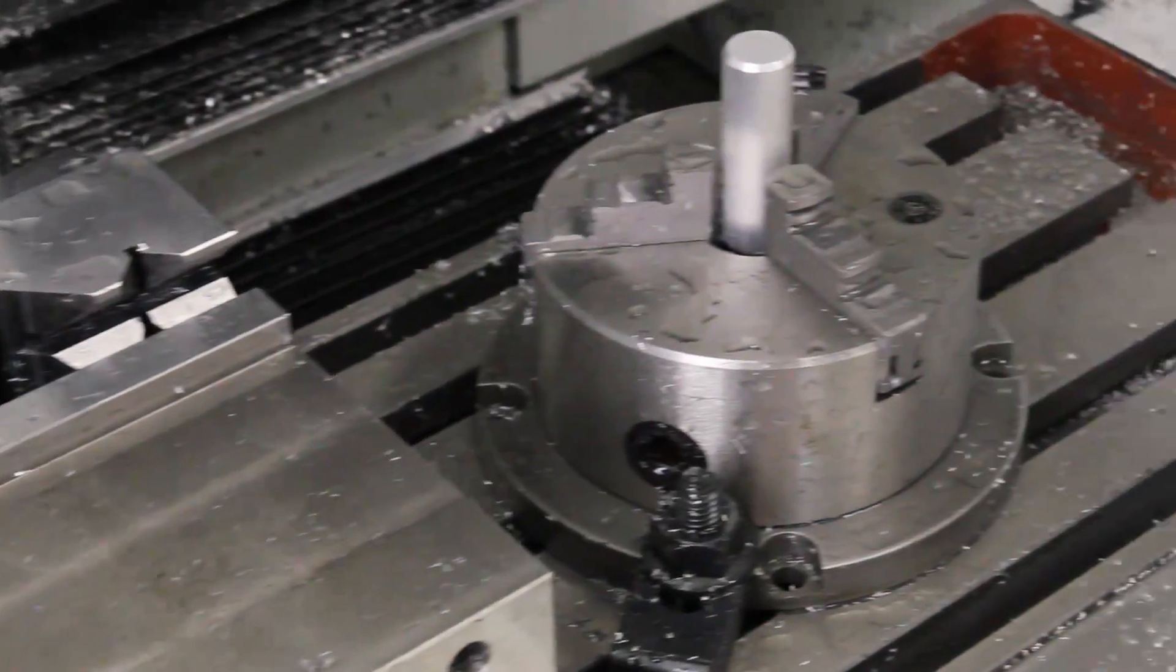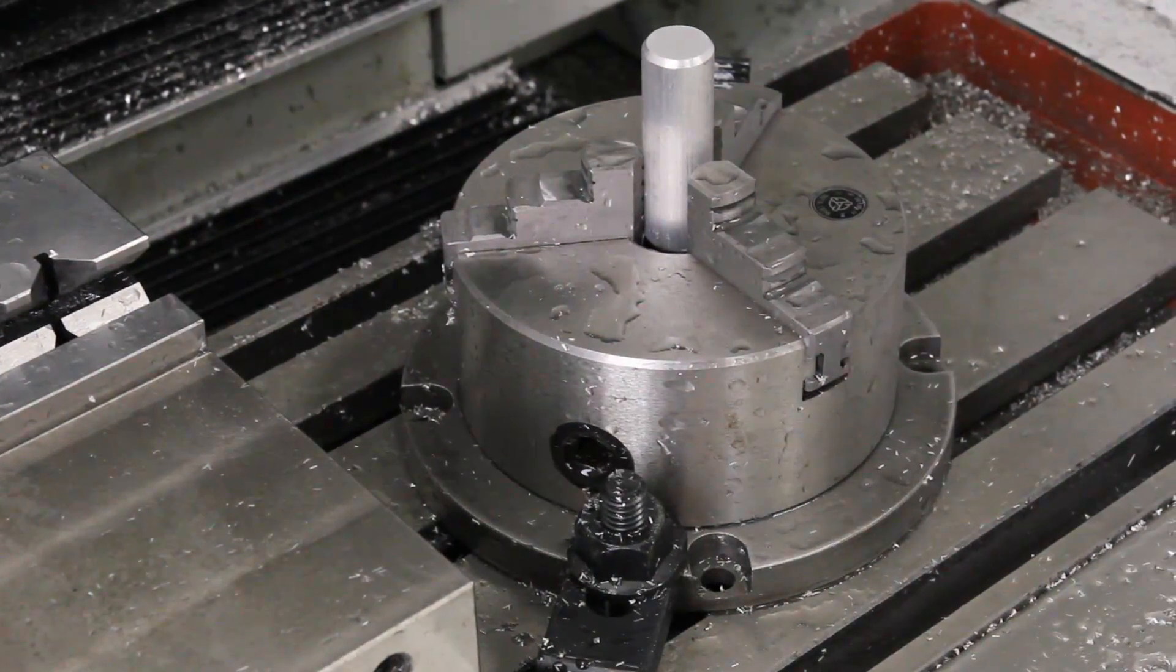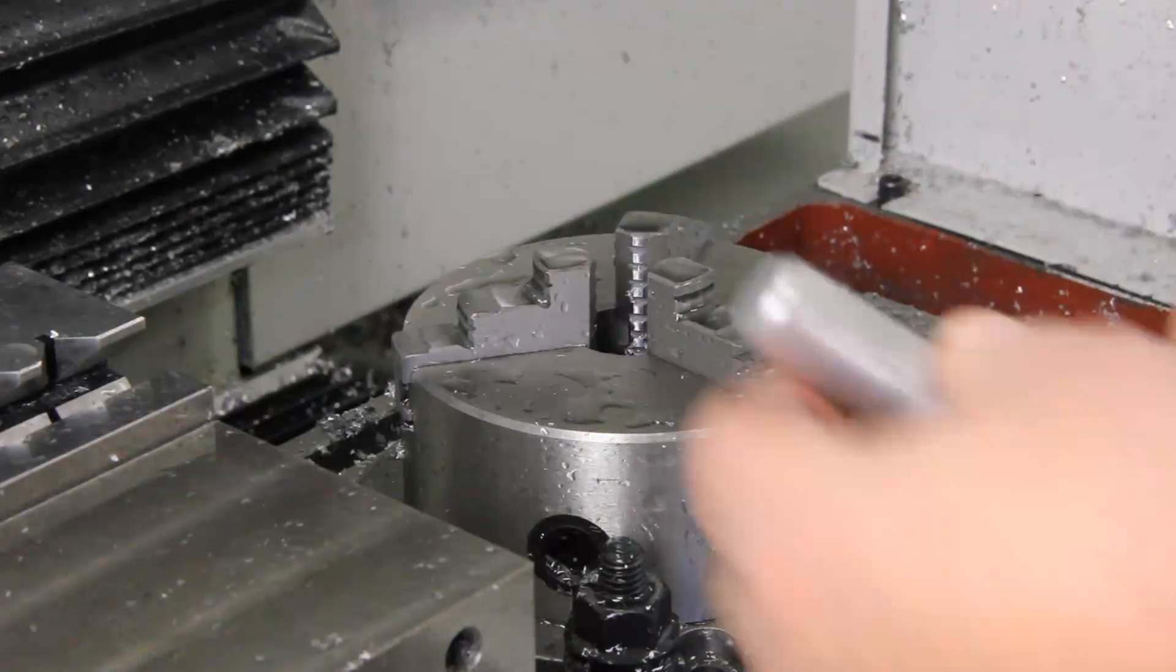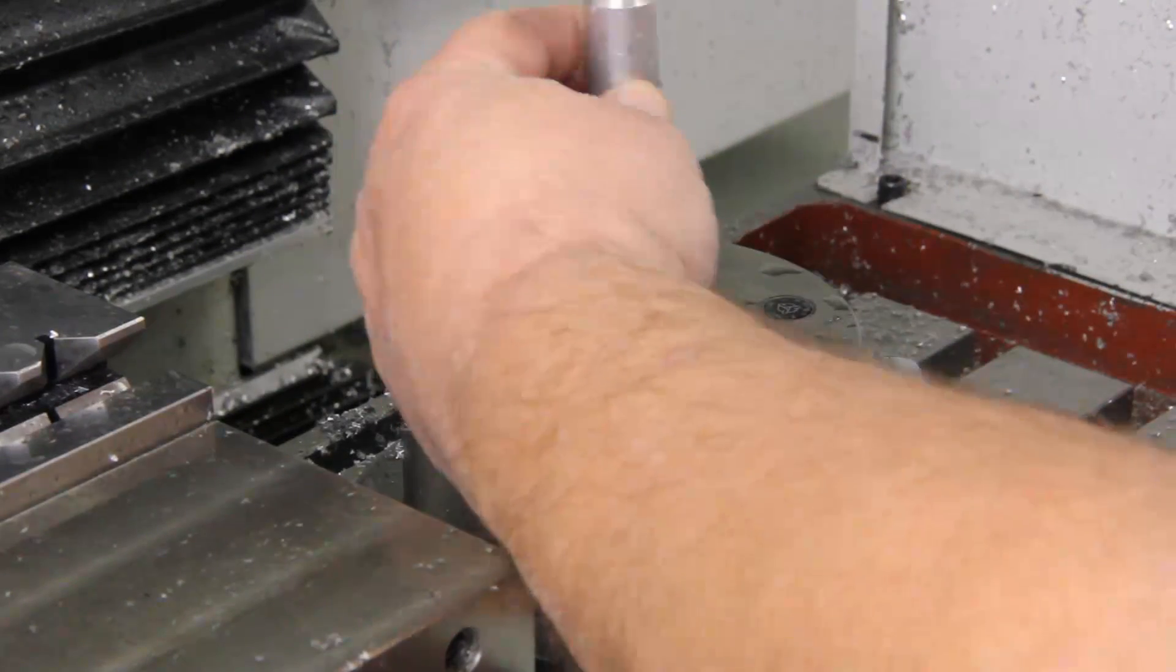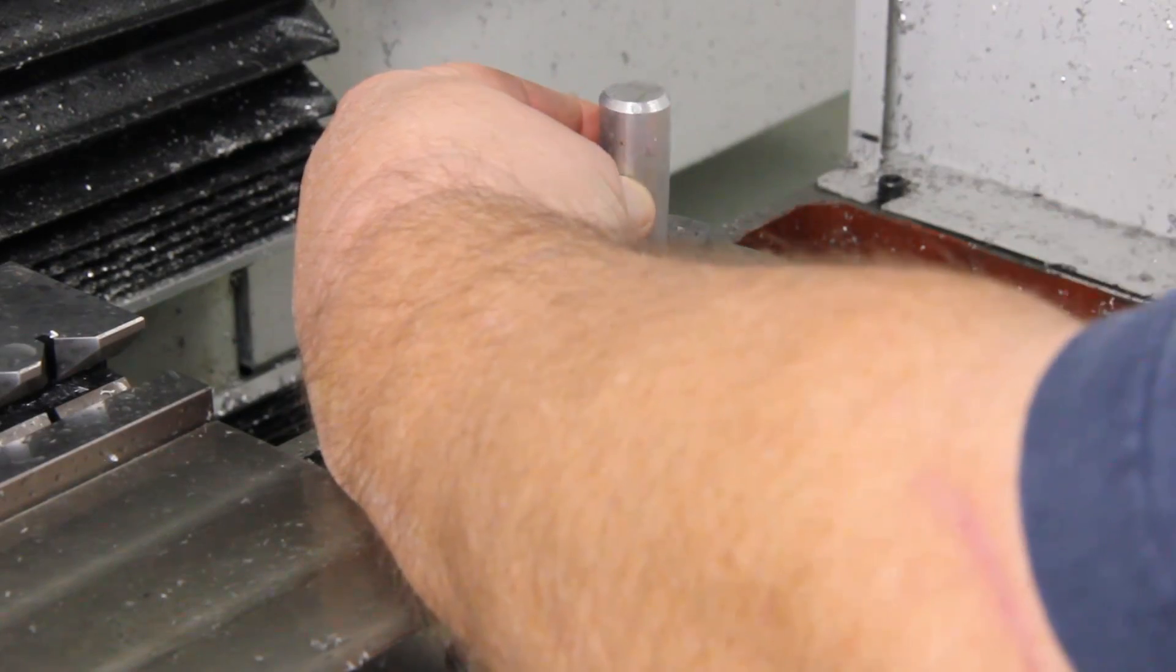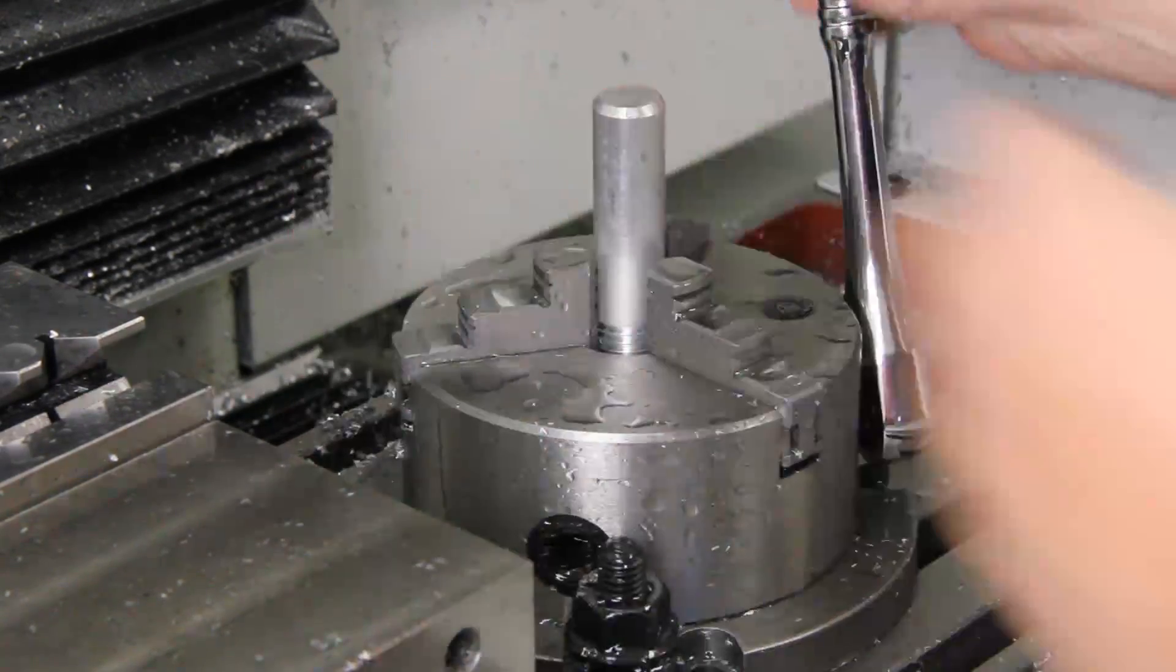In the second example, we will be threading aluminum 6061 T6. Here, we're holding the bar in a three-jaw chuck that's been bolted onto the milling table. The diameter of the bar is three-quarter inch.